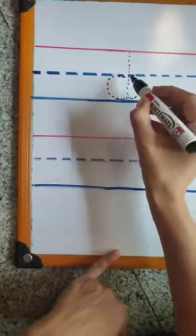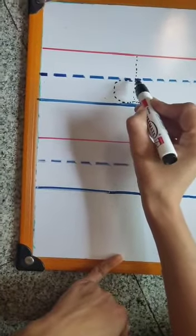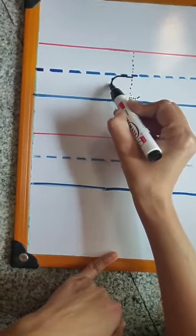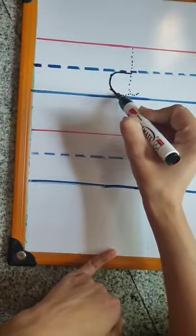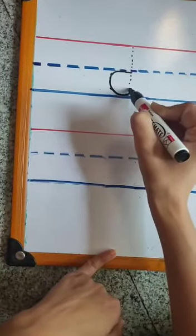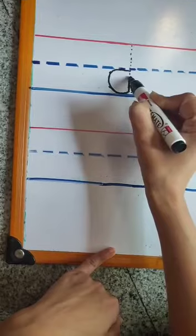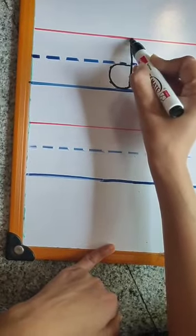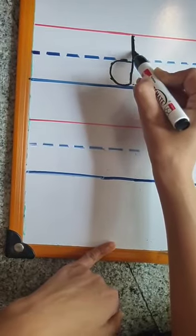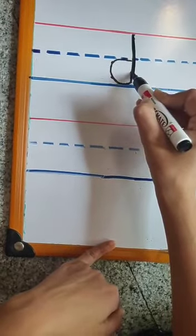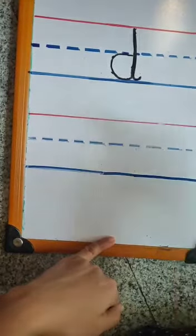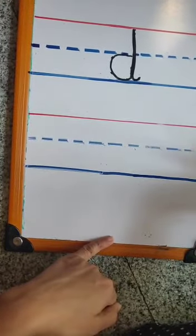We will start from the dotted blue line. We will start with a curvy curl like this. And without moving our pencil we will go upwards towards the red line. And on the same line we will come downwards like this till the bottom blue line. And we will do a little curl like this. We will make a tail.